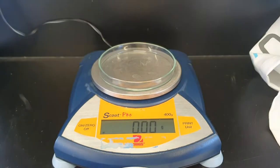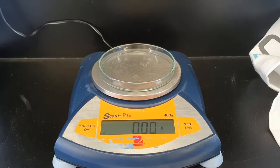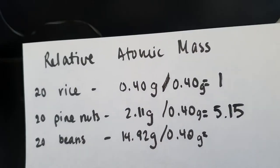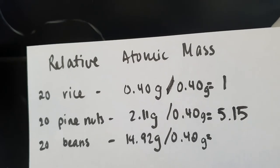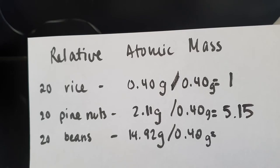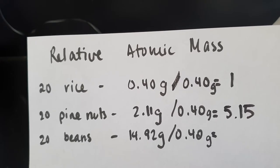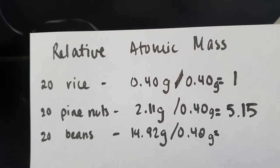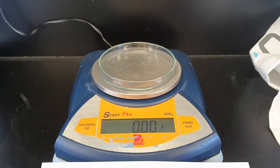So if I just quickly do this calculation. And that gives us, I'm just going to round that to 5.15. So the pine nuts is, the rice is one, mass of one. And the pine nuts is a mass of 5.15. And then the beans has a mass of 37.3.